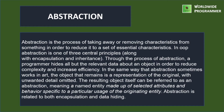Next one is abstraction. Abstraction is the process of taking away or removing characteristics from something in order to reduce it to a set of essential characteristics. In object-oriented programming, abstraction is one of three central principles, along with encapsulation and inheritance. Through the process of abstraction, a programmer hides all but the relevant data about an object in order to reduce complexity and increase efficiency. The resulting object itself can be referred to as an abstraction — a named entity made of selected attributes and behavior specific to a particular usage of the originating entity.